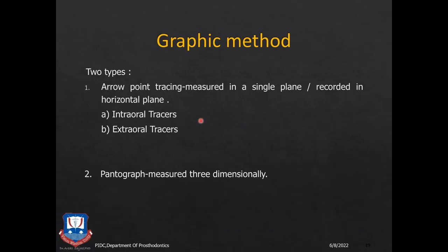The next group of methods is the graphic method. This mainly involves either an arrow-point tracing — also known as gothic arch tracing — or a pantograph, which is used to record the horizontal jaw relationship in a three-dimensional state.